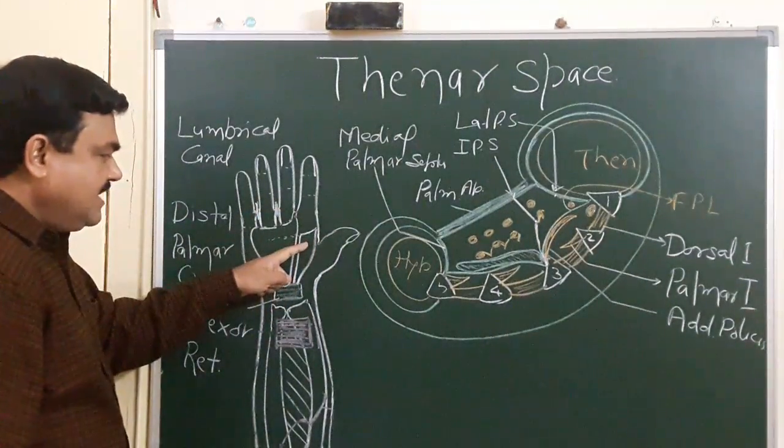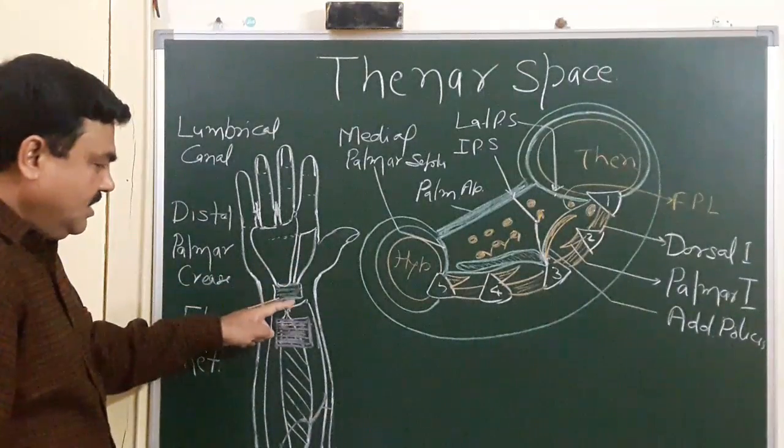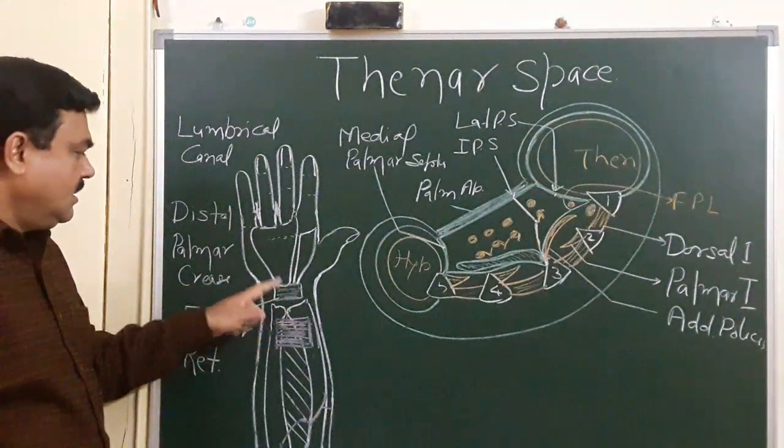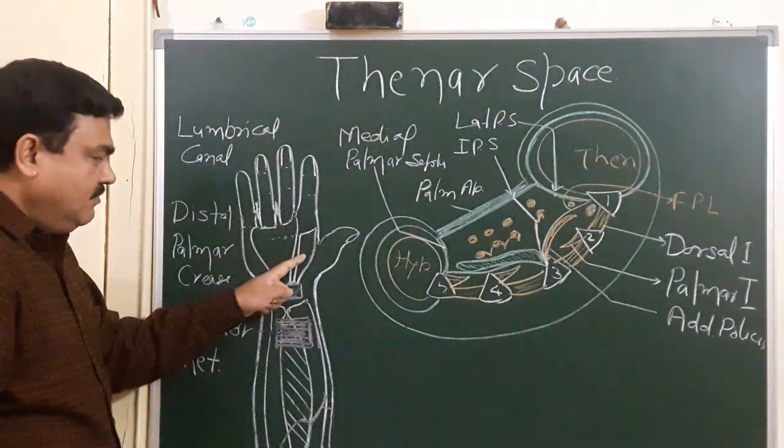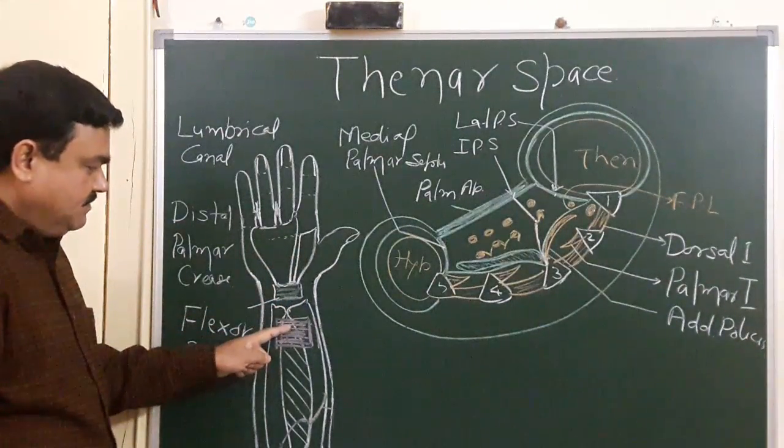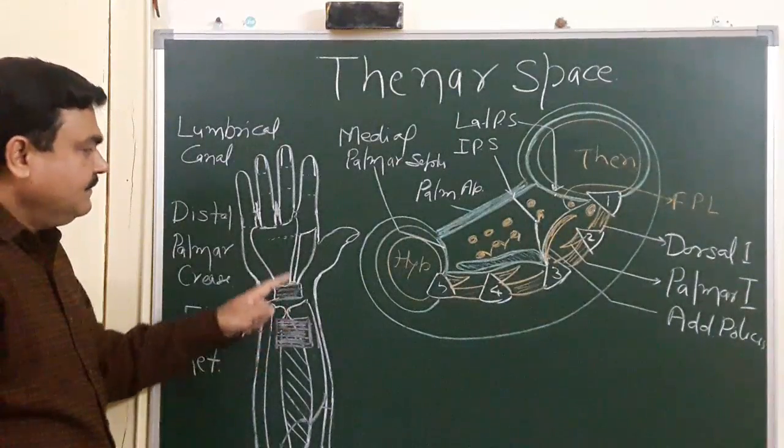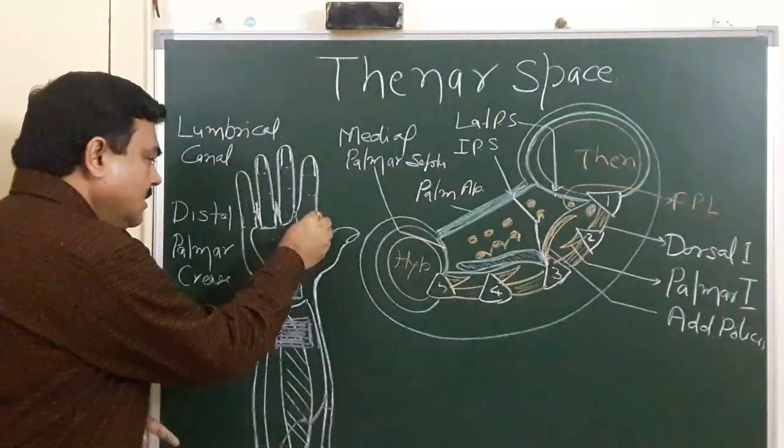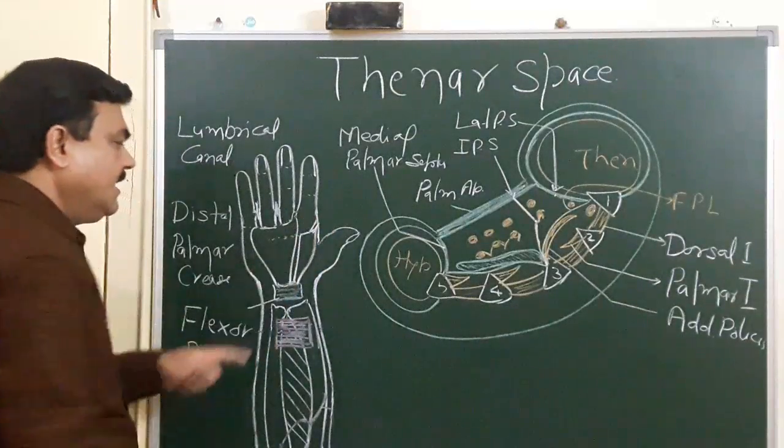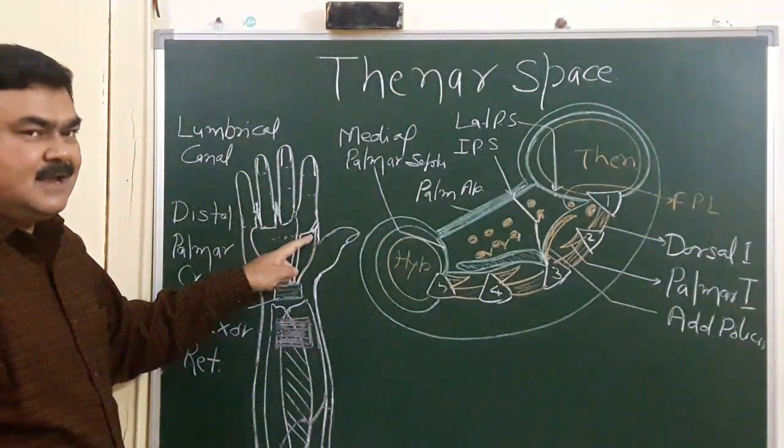This thenar space may communicate here with mid-palmar space, and it may communicate with the space of Parona proximally, and distally, it may communicate with the first lumbrical canal, this is lumbrical canal, first lumbrical canal.